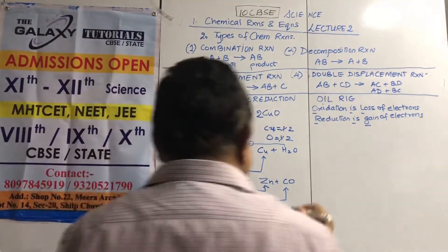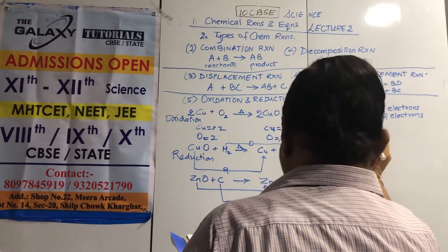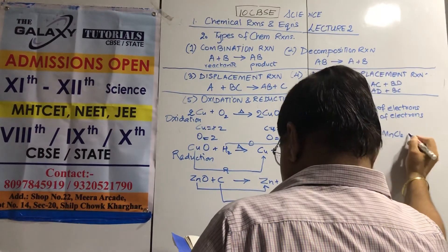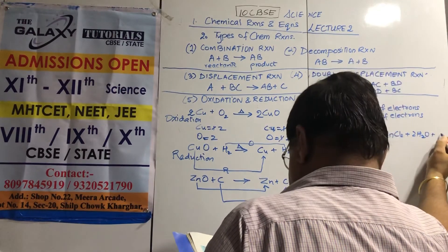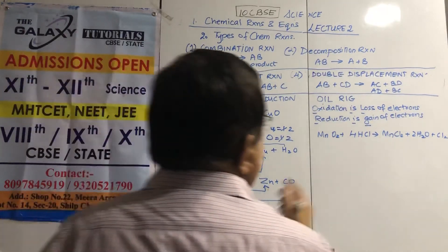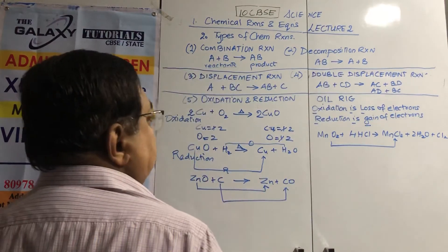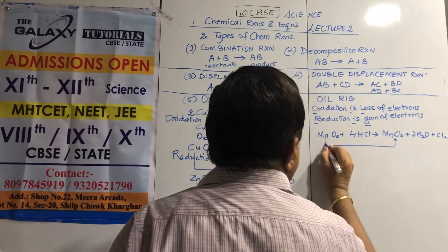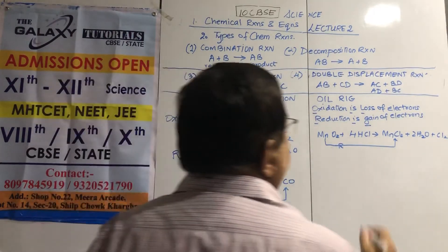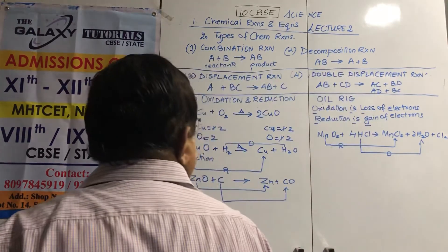One more: MnO2 + 4HCl → MnCl2 + 2H2O + Cl2. Mn has lost oxygen — it is reduced. Hydrogen has gained oxygen — it is oxidized. Chlorine is set free.